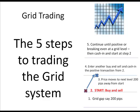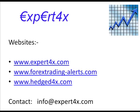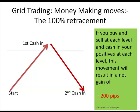Just a reminder: there are five steps to trading the grid system. First, establish a grid. Second, buy and sell at your start level. Third, the price movement occurs. Fourth, enter buy and sell at the next grid level and cash in the positive, letting the negative ride. Fifth, continue that process until transactions are positive or breaking even at a grid level — then cash in and start again. For more information, you can visit the listed sites or contact info@expertforex.com.